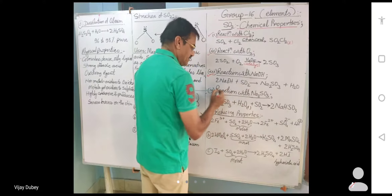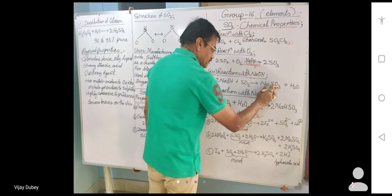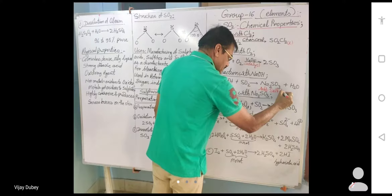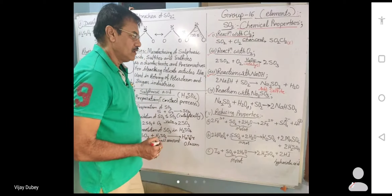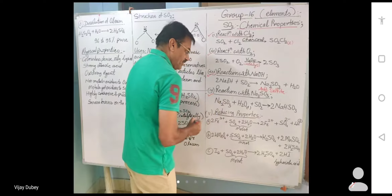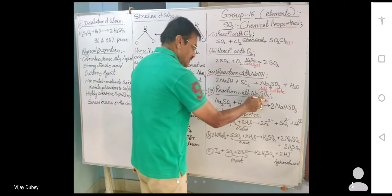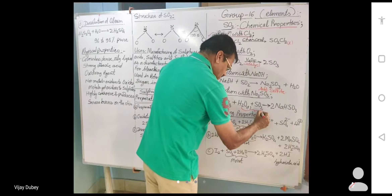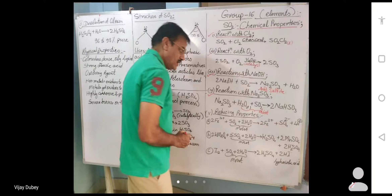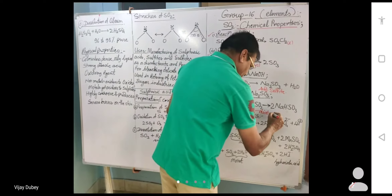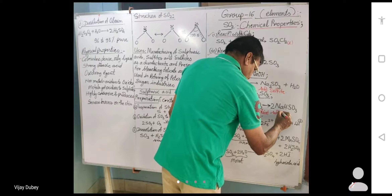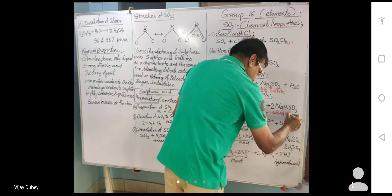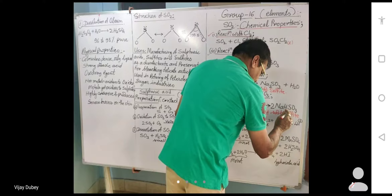The next reaction is with NaOH. When sulfur dioxide is reacted with an alkali like NaOH, it forms sodium sulfite. On further reaction with sodium sulfite and moist sulfur dioxide, we get sodium bisulfite.